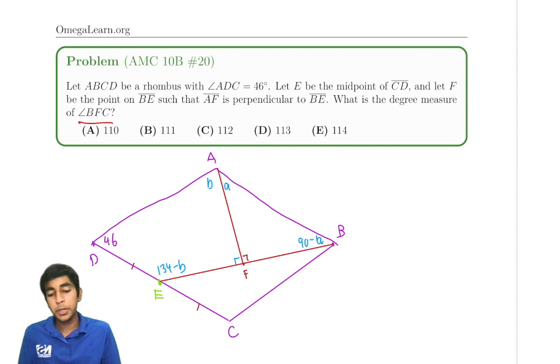So a strategy in geometry problems is to see that angle ADC is 46. Got these 90 degree angles over there. We've got a rhombus, which means all of these sides are equal. That's going to be something to use.